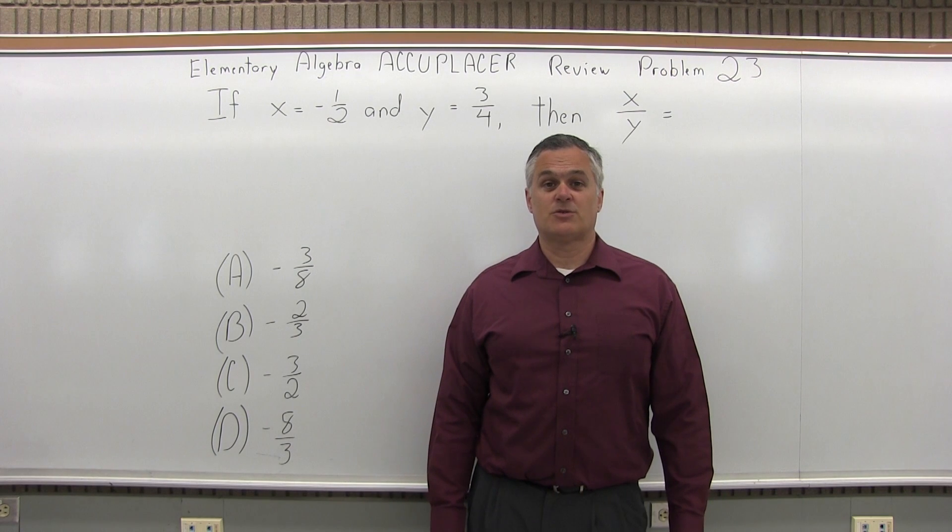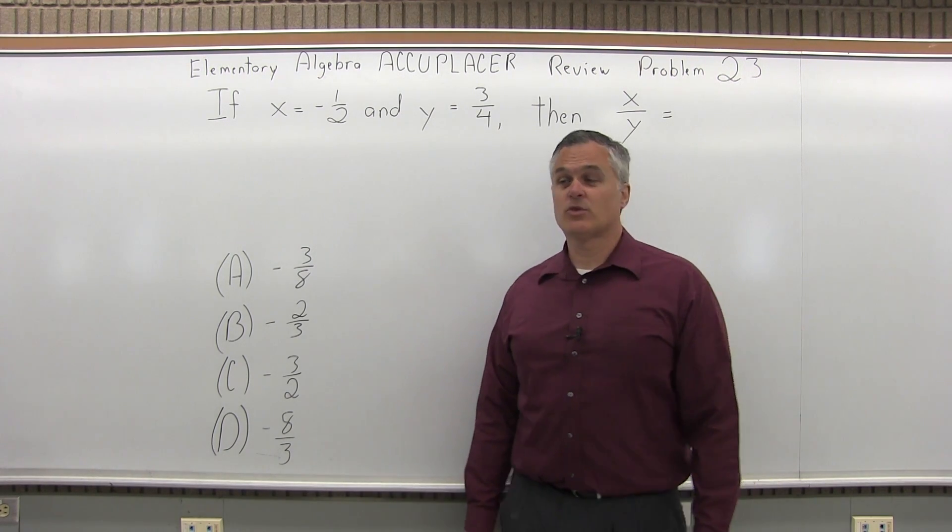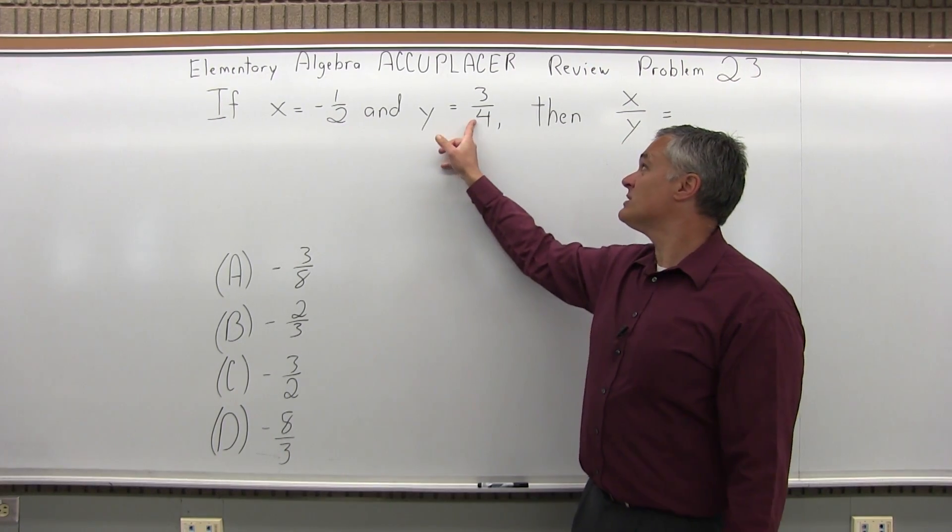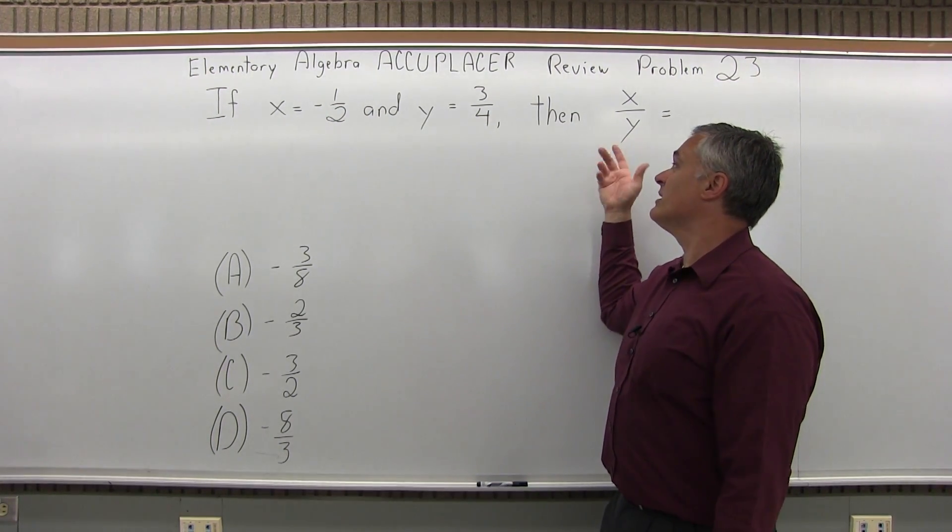This is the Elementary Algebra Accuplacer Review, Problem number 23. It says if x is negative one-half and y is positive three-quarters, then x over y equals what?